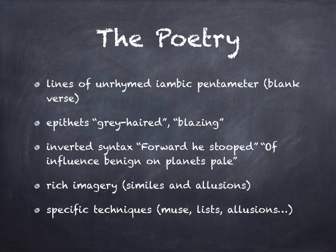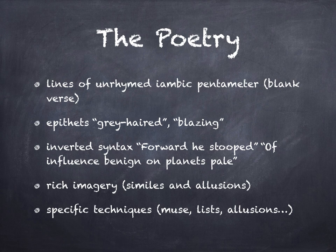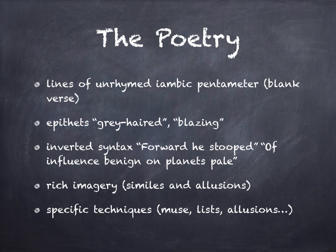Here we have 'grey-haired Saturn' and 'blazing Hyperion', and this helps with the contrast between the two. There are also very many examples of inverted syntax — where the words are flipped round in their order in the poem. For example, Keats uses the phrase 'forward he stooped' instead of 'he stooped forward', or 'of influence benign on planets pale' rather than 'of benign influence on pale planets'. So he plays around and mixes up words for poetic effect.